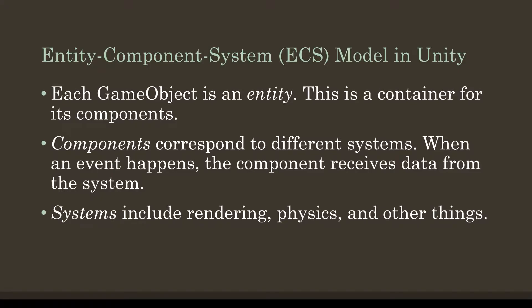When an event happens or a message is sent, the component receives the data from the corresponding system. Systems include named systems such as rendering, physics, and others. The Entity Component System model uses a set of systems that run in a specific order to send data to components, which are part of entities.